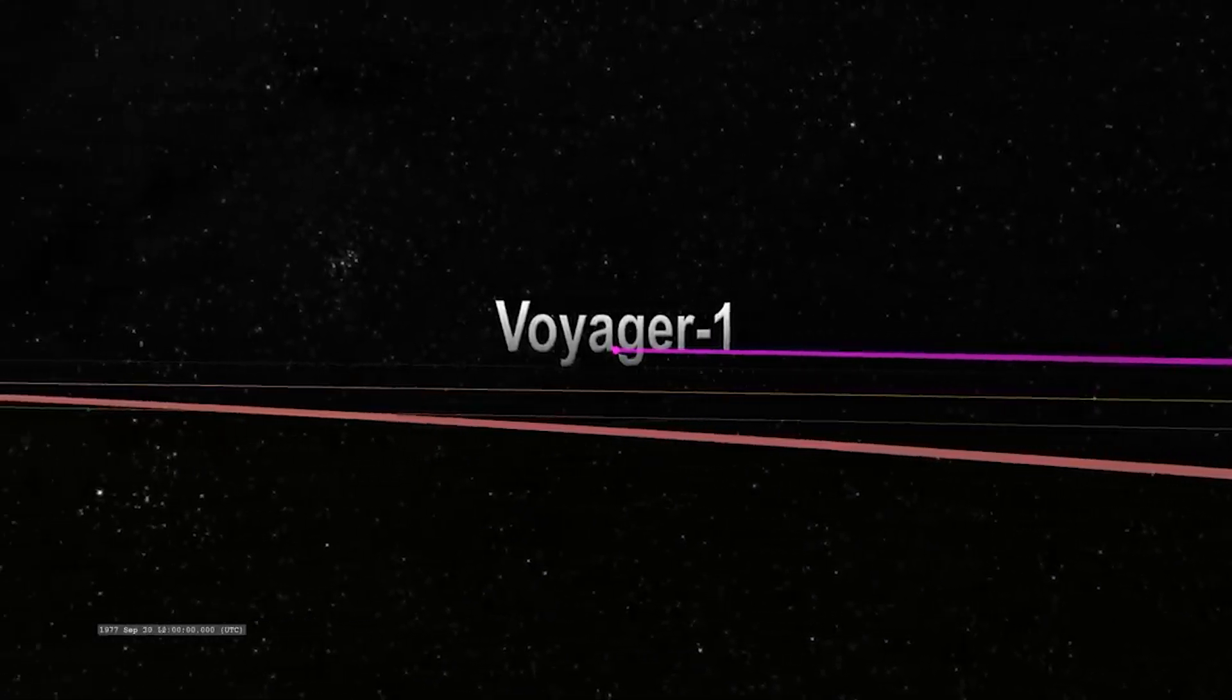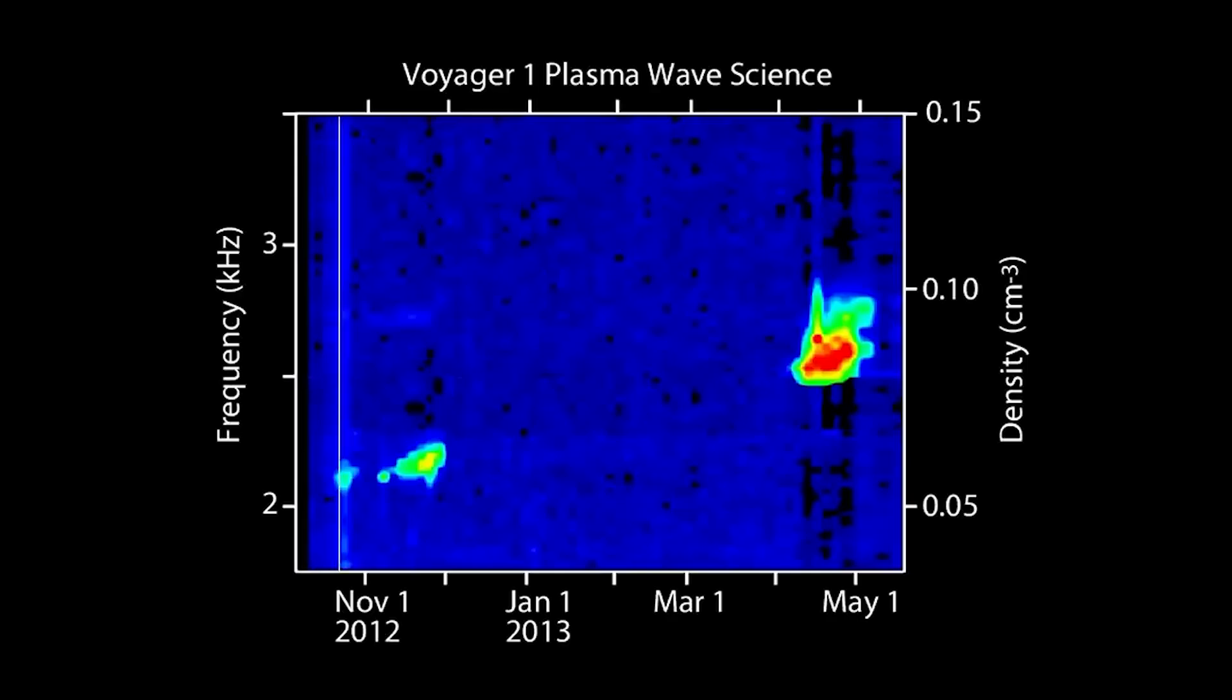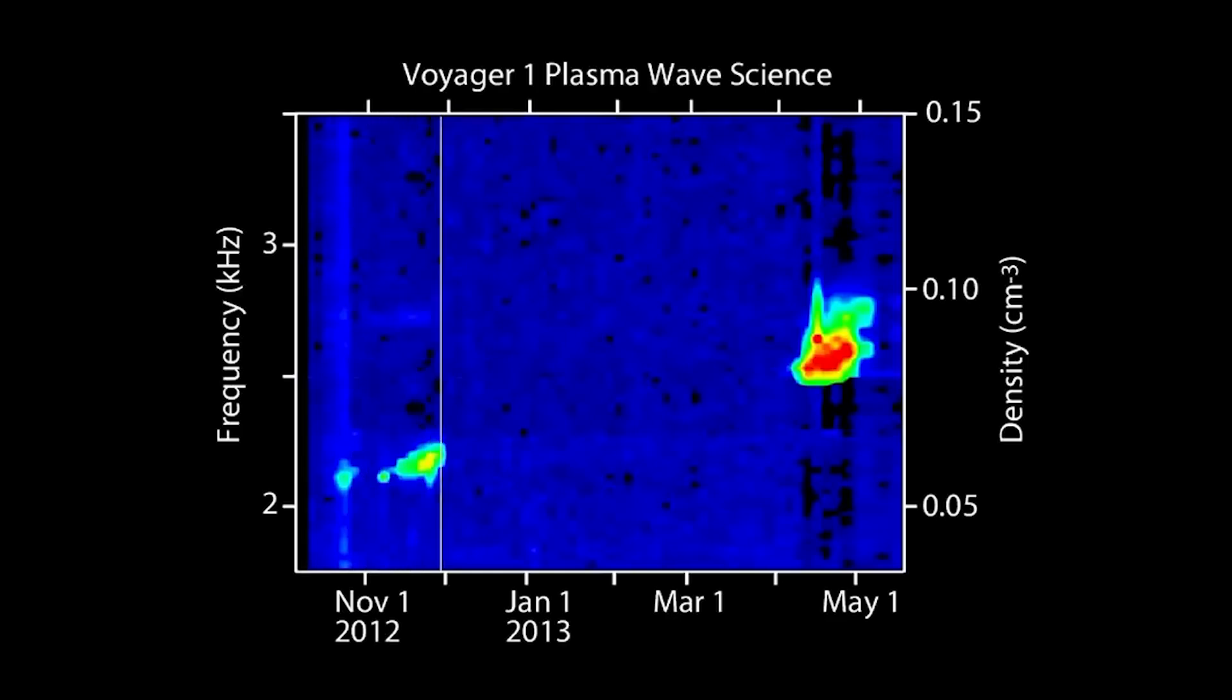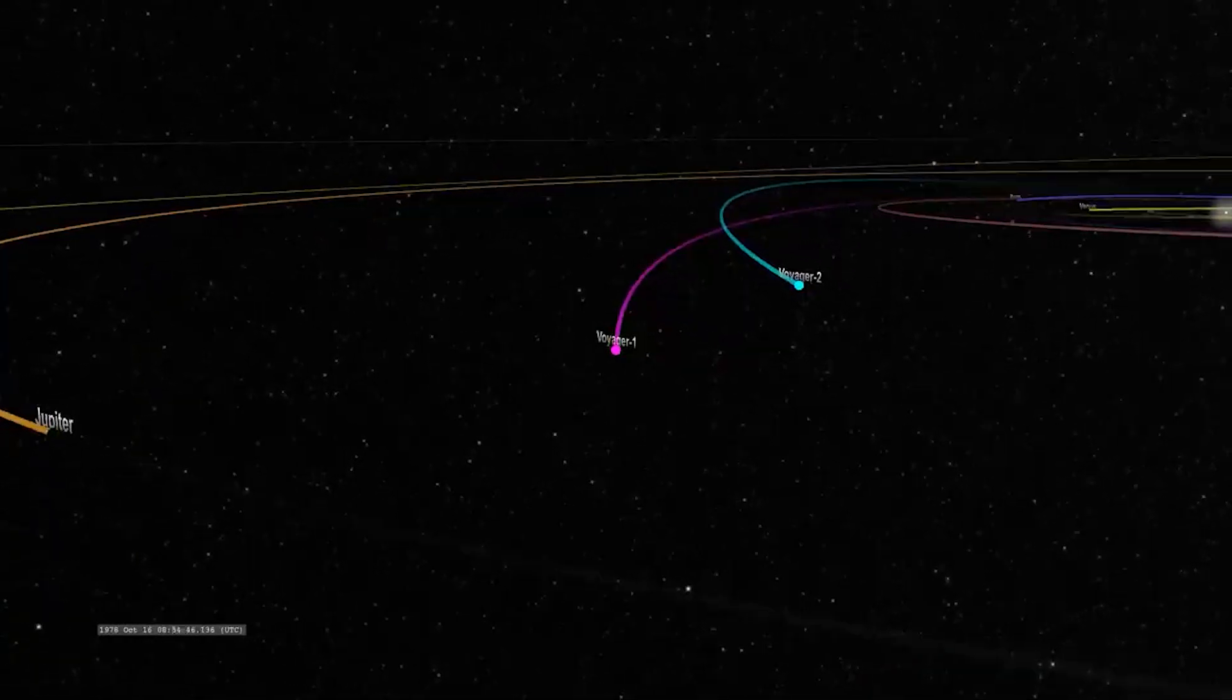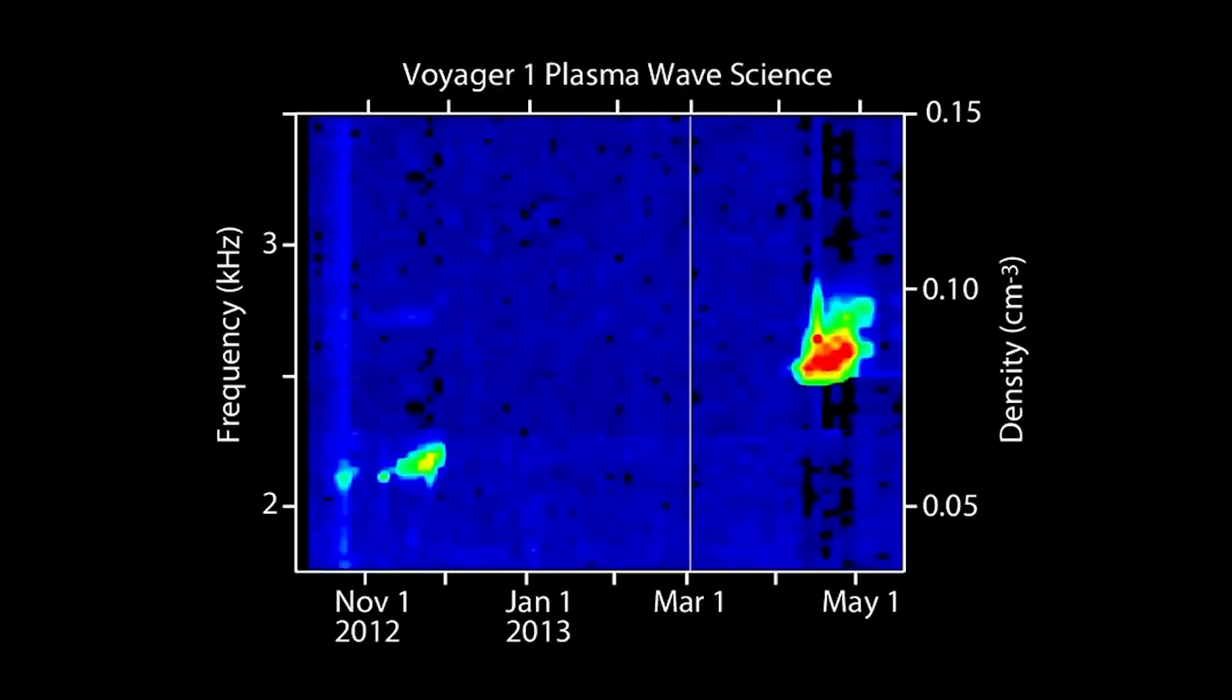NASA's Voyager 1 spacecraft recorded vibrations of dense interstellar plasma, or ionized gas, in interstellar space. These sounds, when converted to audio, reveal a haunting, persistent tone.